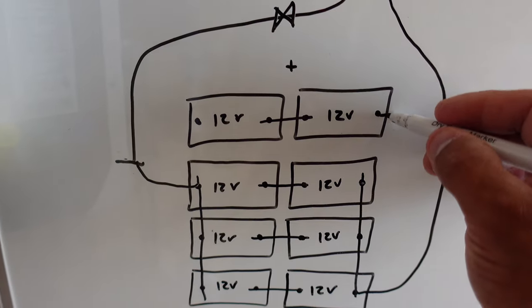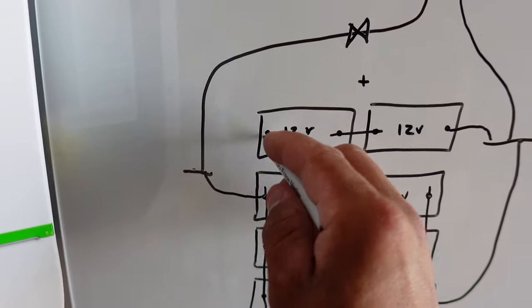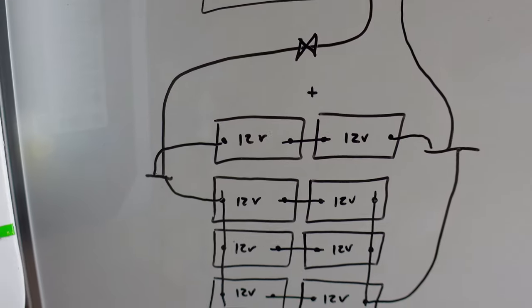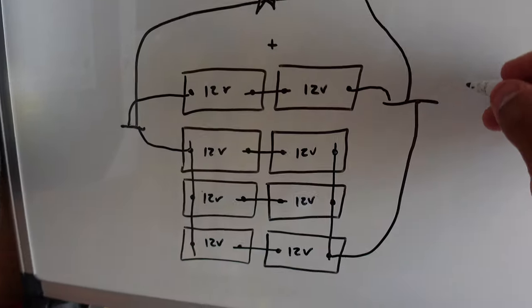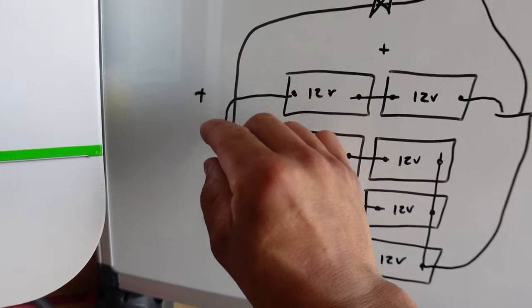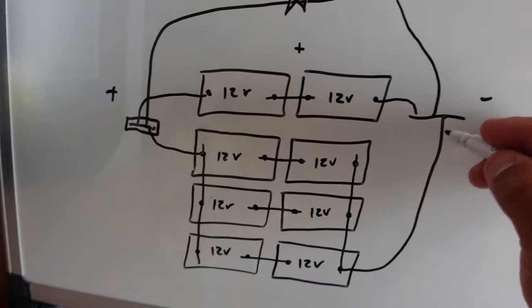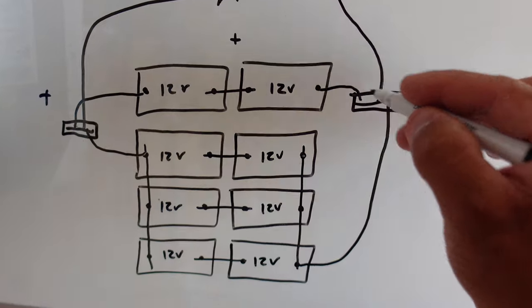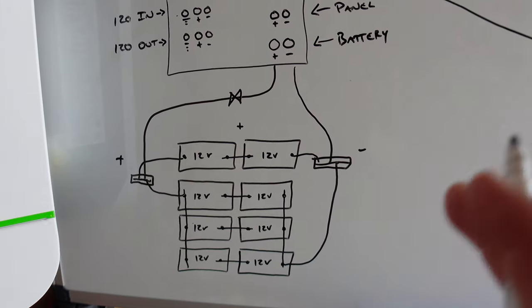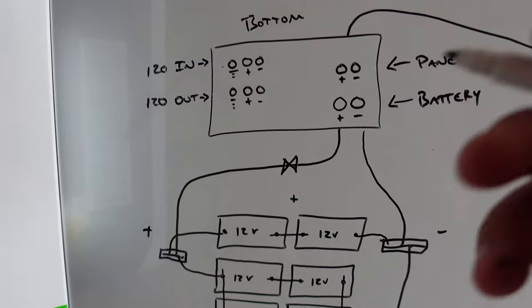This one runs to the negative bar and this one runs the positive bar, so that's how all my batteries are hooked up. This is the negative and this is the positive bus bar. That's my setup right there.